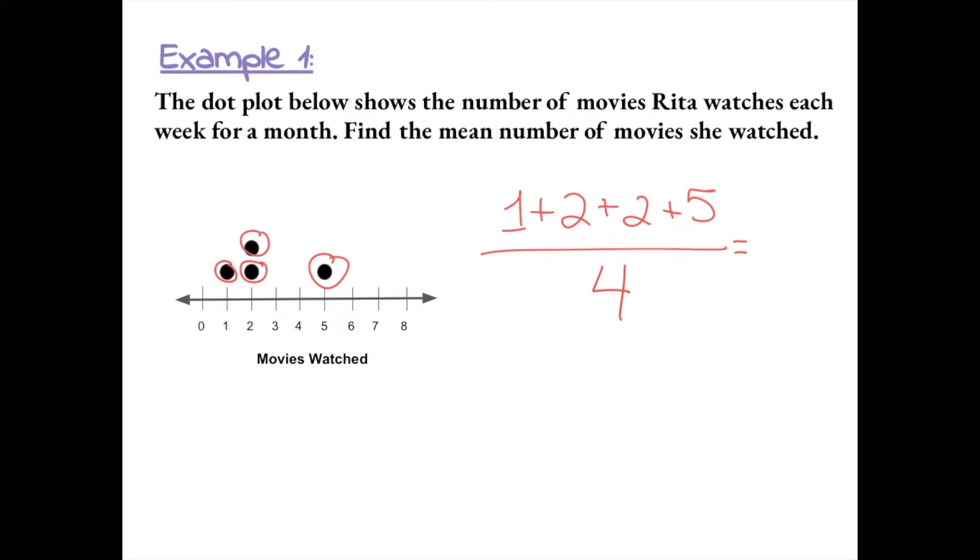So the sum of one plus two plus two plus five gives us ten. So then we have to divide ten by four, and ten divided by four gives us 2.5. So on average, she watched about two and a half movies each week.